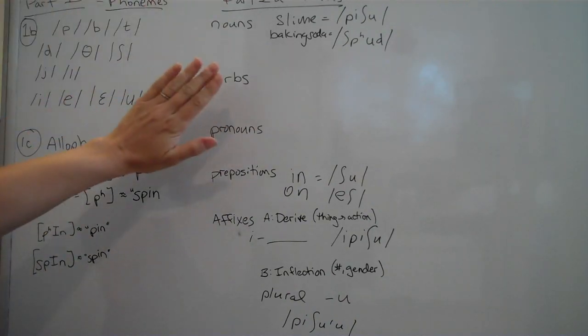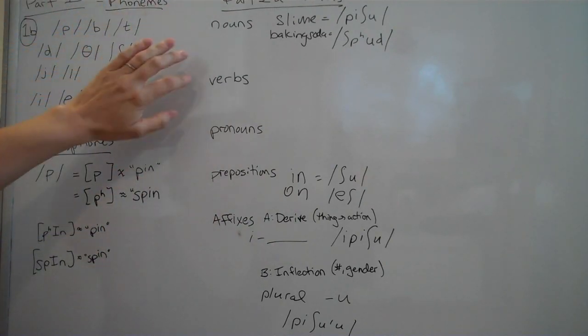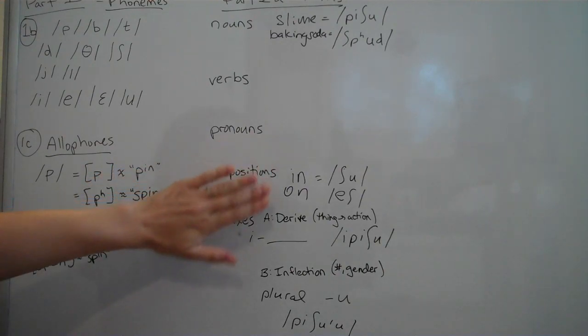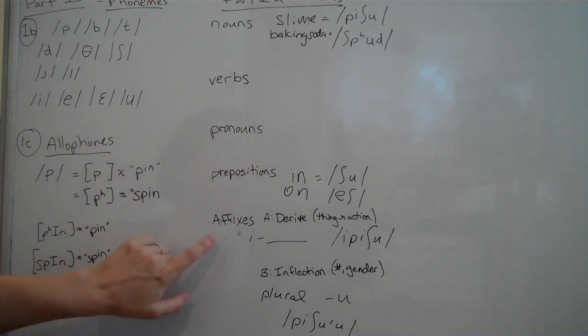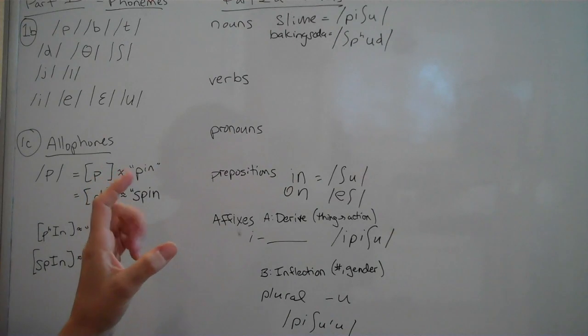So part two this week we're going to make words using the consonants that we've picked. And you need to make nouns, verbs, pronouns, prepositions like in or on, and then a couple of kinds of affixes. Something to derive a word from a noun to a verb, a thing to an action, or vice versa. And something to inflect a word, to make it plural, like there are many, or there's one, two, and many. However you want to do it. Or to change the gender, like if you have a gendered language that includes that in the words.